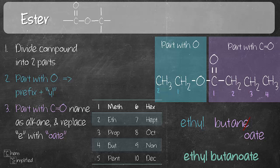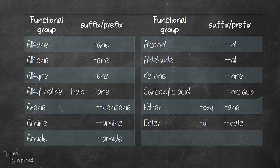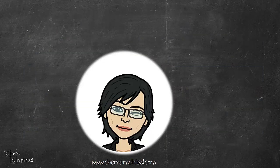I hope you find this helpful. If at any point you need a refresher or start getting confused, jump to any part you need to review and go over it until you feel confident. Here's the table that summarizes all the functional groups covered in this two-part series. Please subscribe and click on the bell icon so you get notified of new videos, and head over to Chem Simplified for blog posts and practice questions related to this topic.